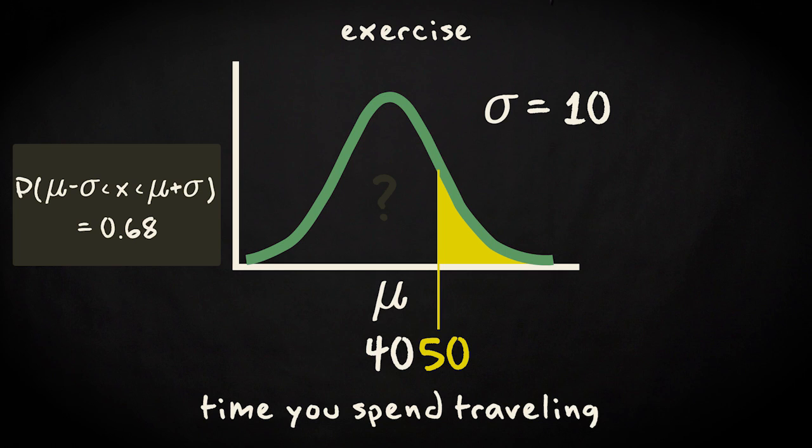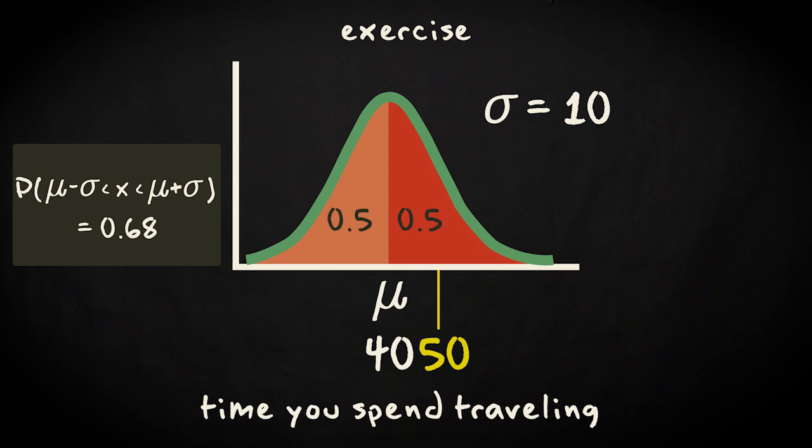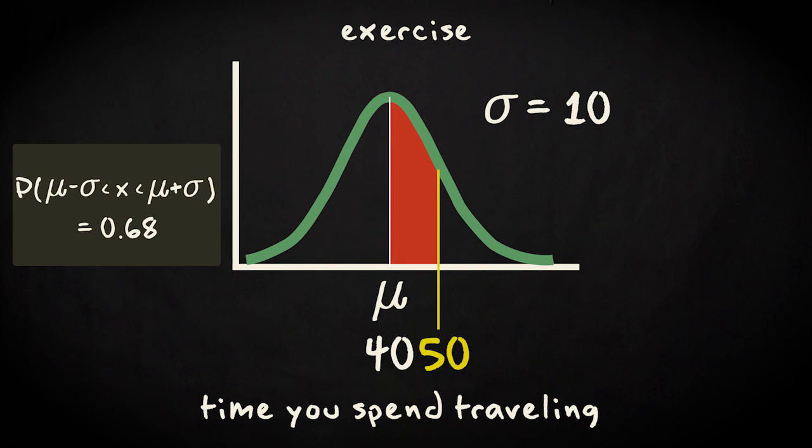To answer this question, a bit of creativity is required. You know that the normal distribution is symmetric. So half of the probability is located at one side of the mean, and therefore also the probability for the interval between the mean and the mean plus 1 standard deviation is half of 0.68, which is 0.34.